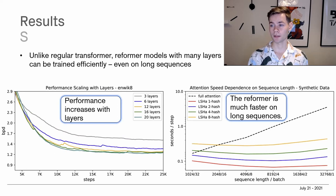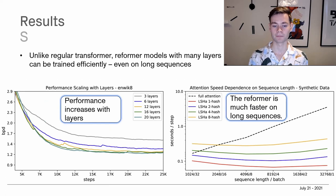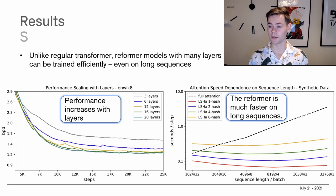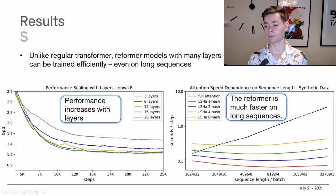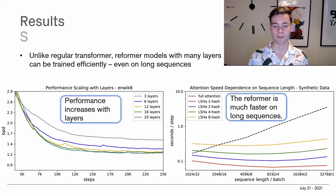The key result is that we don't significantly lack performance — we perform equally well as full attention, or at least very close to it. And here is where the model really shines: looking at the right graph, as we increase the sequence length fed into the model, the dashed line for full attention grows quadratically, whereas the new model with varying degrees of hashes only grows linearly. This makes a huge difference for bigger input sequences, and that is really the key result they demonstrate.